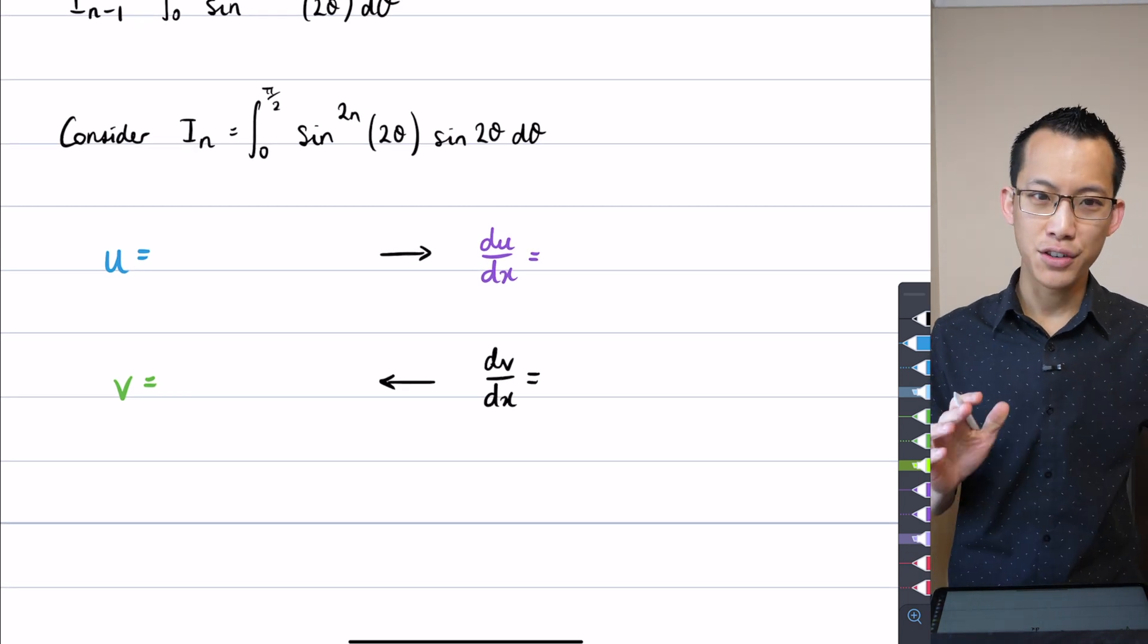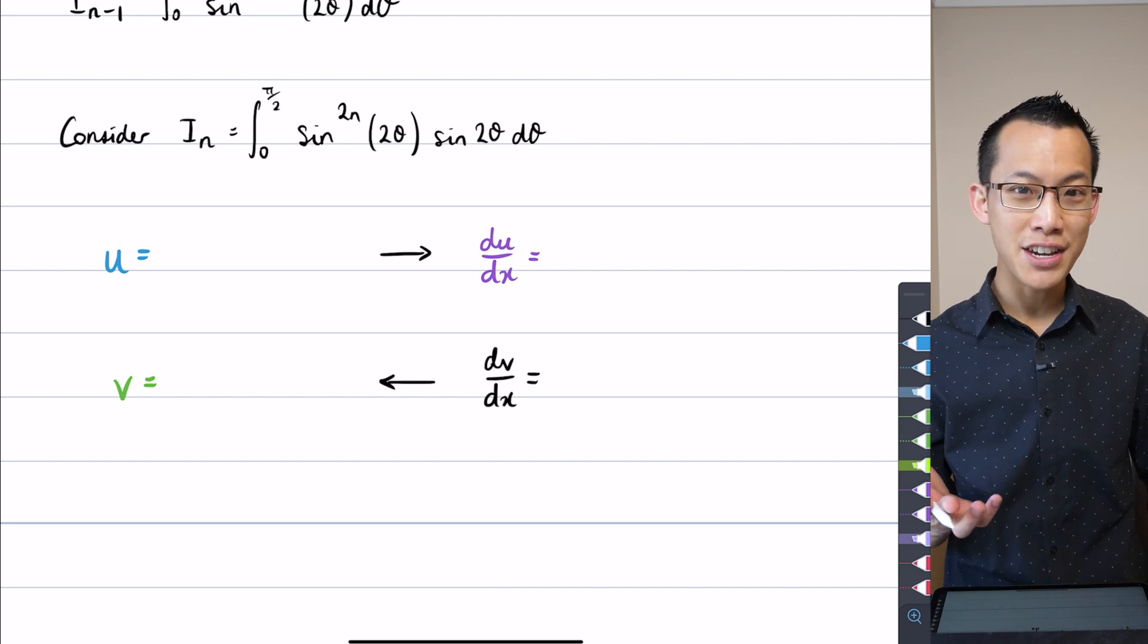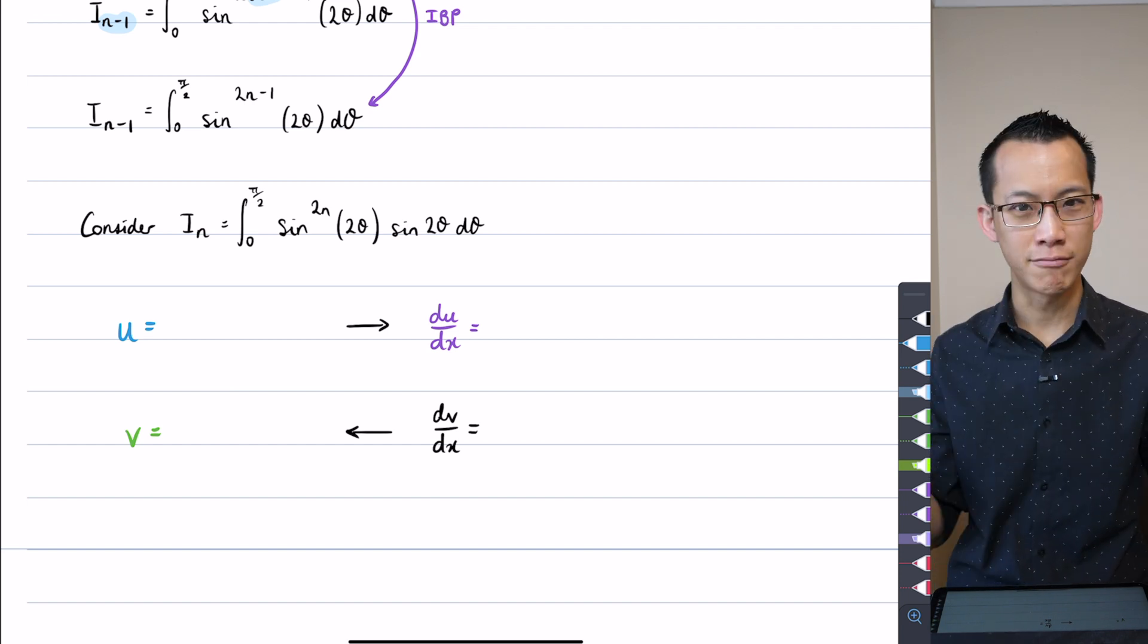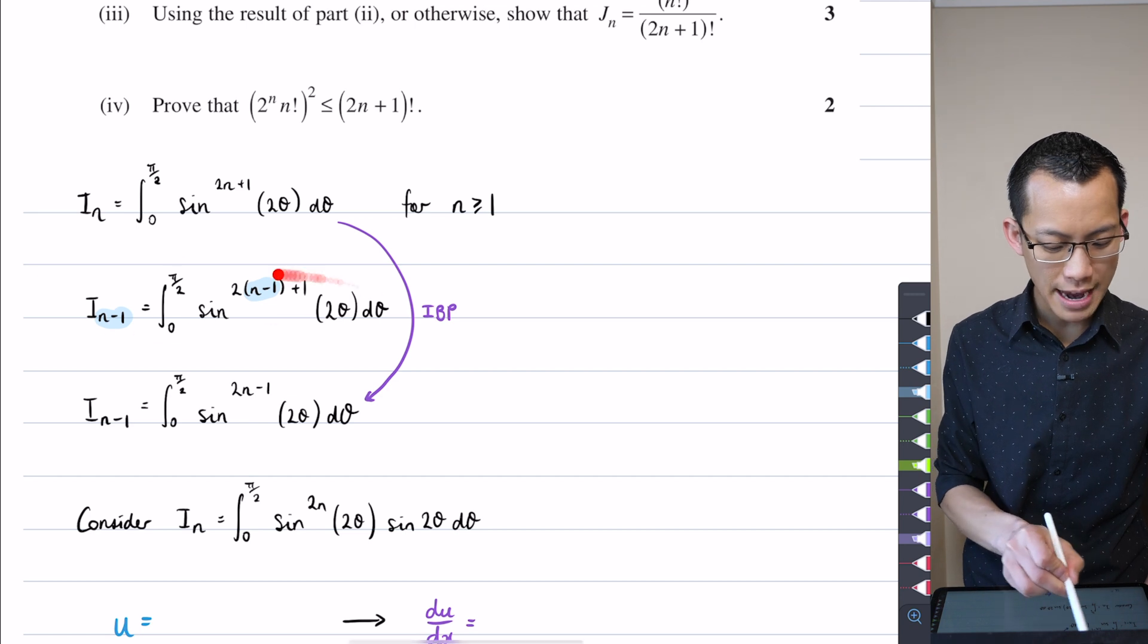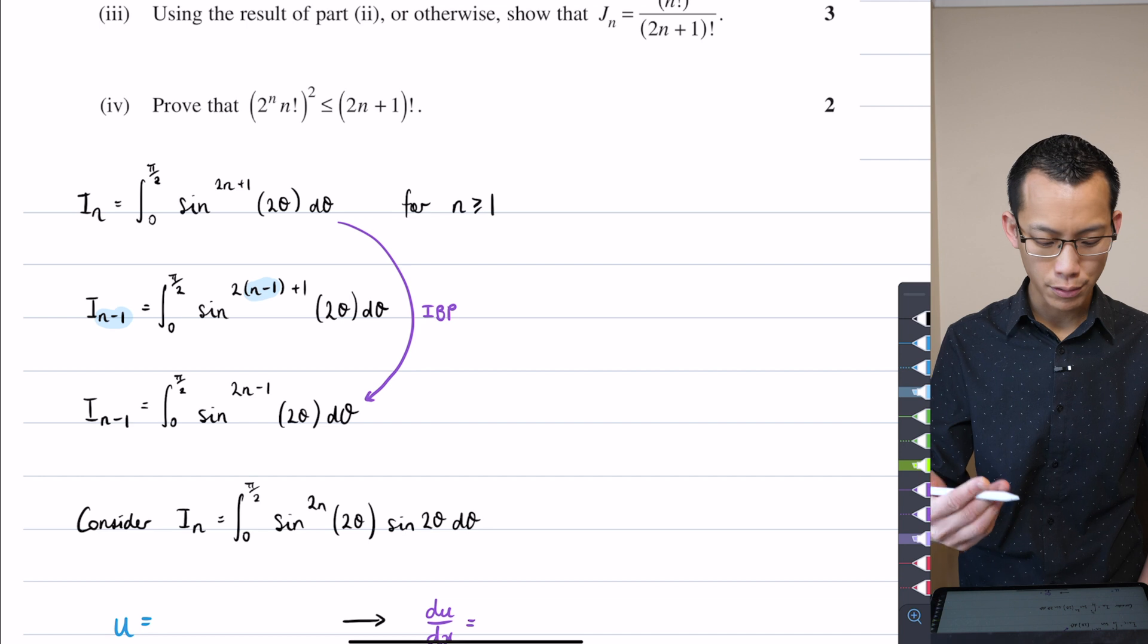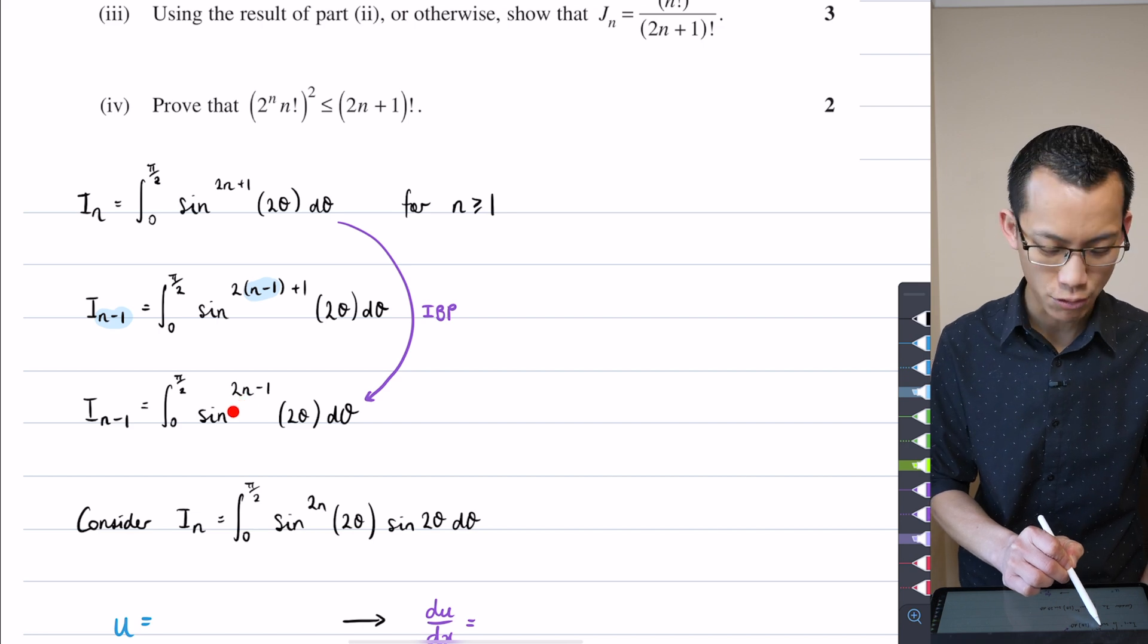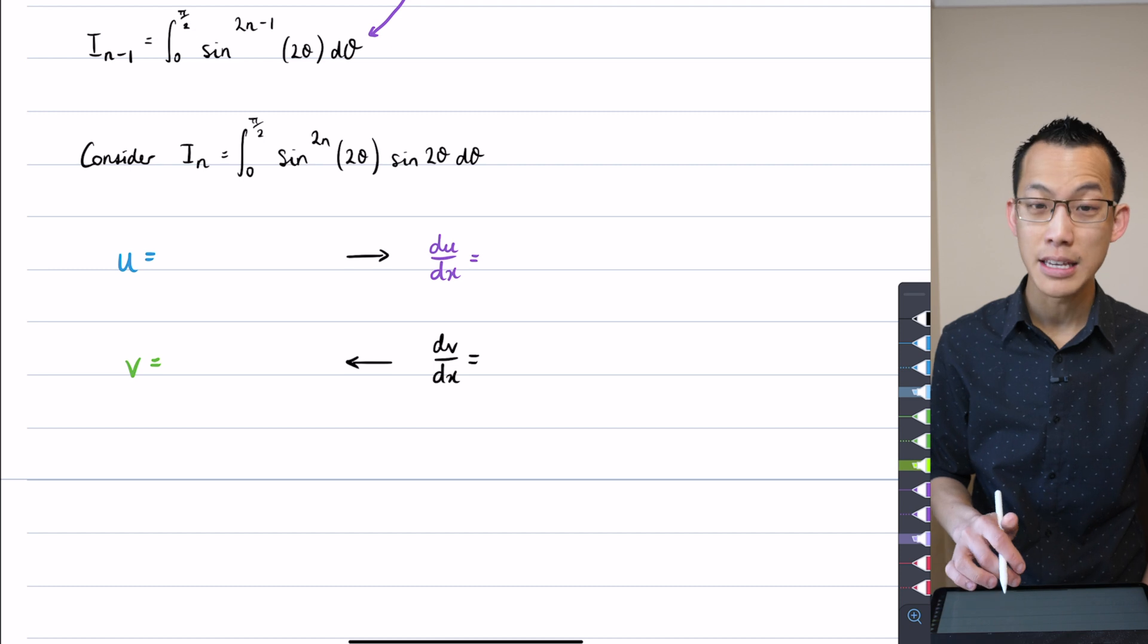Remember that we select U and DV based on what's easier to differentiate and what's easier to integrate. Also in this case, recall this I_(N-1) needs to appear somewhere, right? So that should be the clue that if I have something which has a power of 2N, when you differentiate that once using chain rule, that's going to bring it down to 2N-1. That's kind of why I chose to do this in the first place.